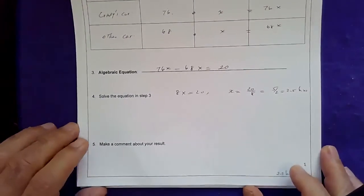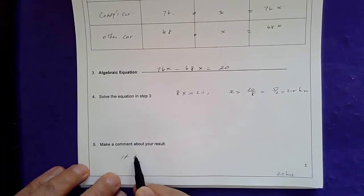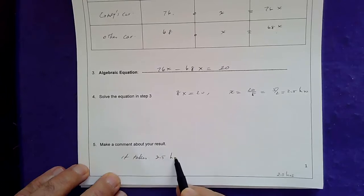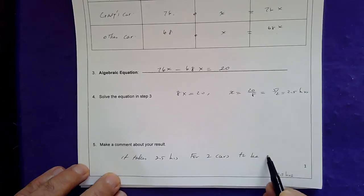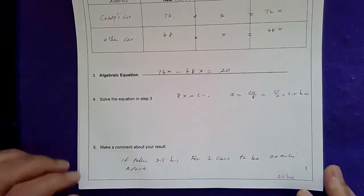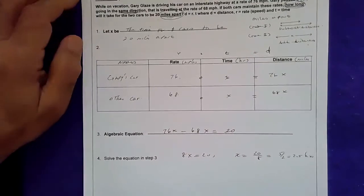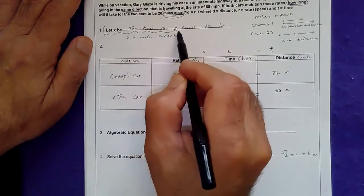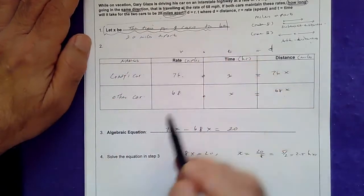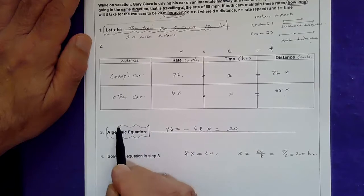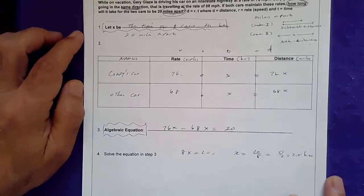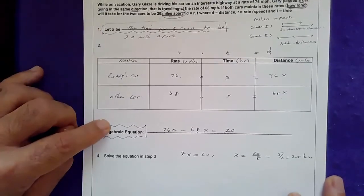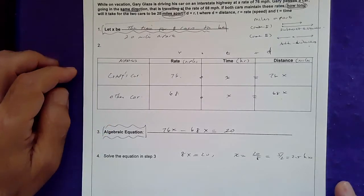It takes 2.5 hours for the two cars to be 20 miles apart. Remember, the main components of any word problem are: let x be (describe what x stands for) and the correct algebraic equation. The rest are like icing on the cake. There is no guessing involved.